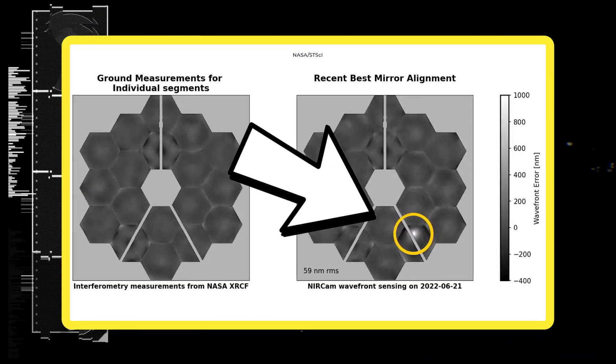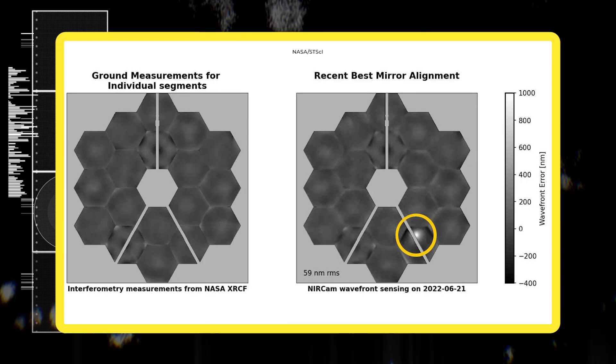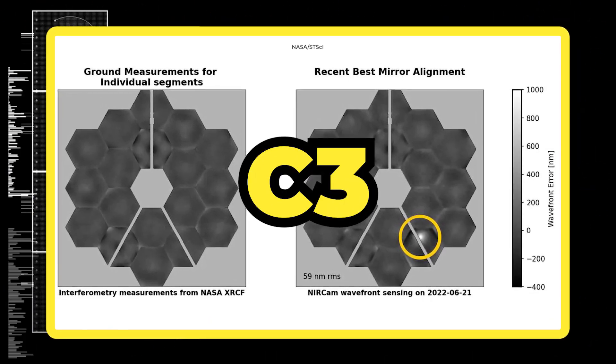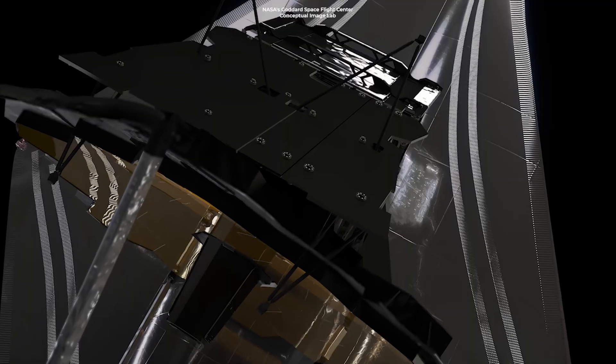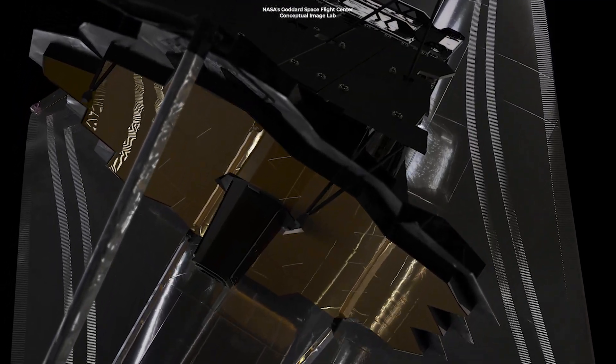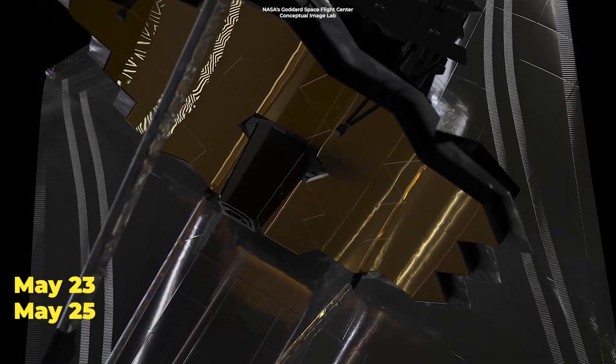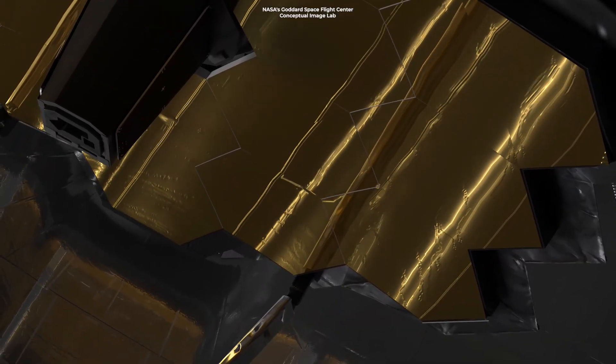On the right, you can see the damage on one of Webb's 18-hexagonal golden mirrors called C3 after being struck by an unexpectedly large micrometeoroid. The impact, which likely happened between May 23rd and May 25th of this year, left permanent damage.